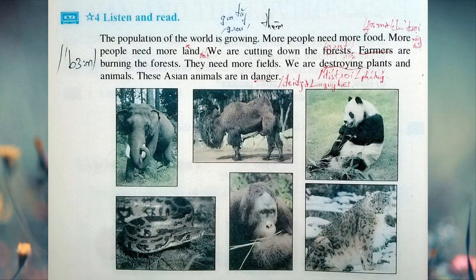Activity four: Listen and read. The population of the world is growing. More people need more food; more people need more land. We are cutting down the forest — farmers are burning the forest because they need more fields. We are destroying plants and animals. These Asian animals are in danger: tiger...